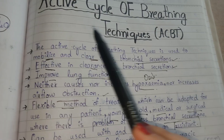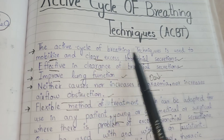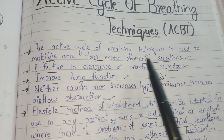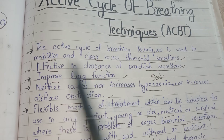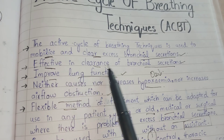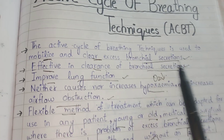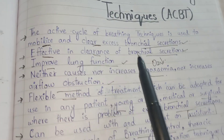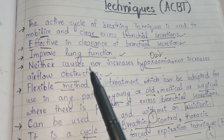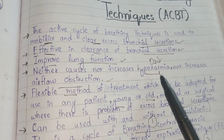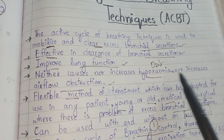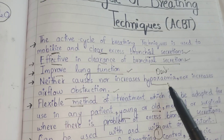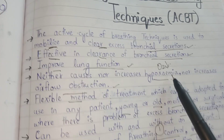Active Cycle of Breathing Technique is used to mobilize and clear excess bronchial secretions. It is also effective in clearance of bronchial secretions and improves lung function. It neither causes nor increases hypoxemia, nor increases airflow obstruction. Hypoxemia is low oxygen level in your blood.